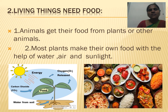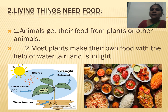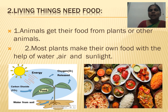Let's see the second characteristic: living things need food. All living things need food to grow and to get energy to do their work — plants, animals, birds, insects — each and every living thing needs food. Animals get their food from plants and other sources. Most plants make their own food with the help of water, air, and sunlight. Plants prepare the food in the leaf.